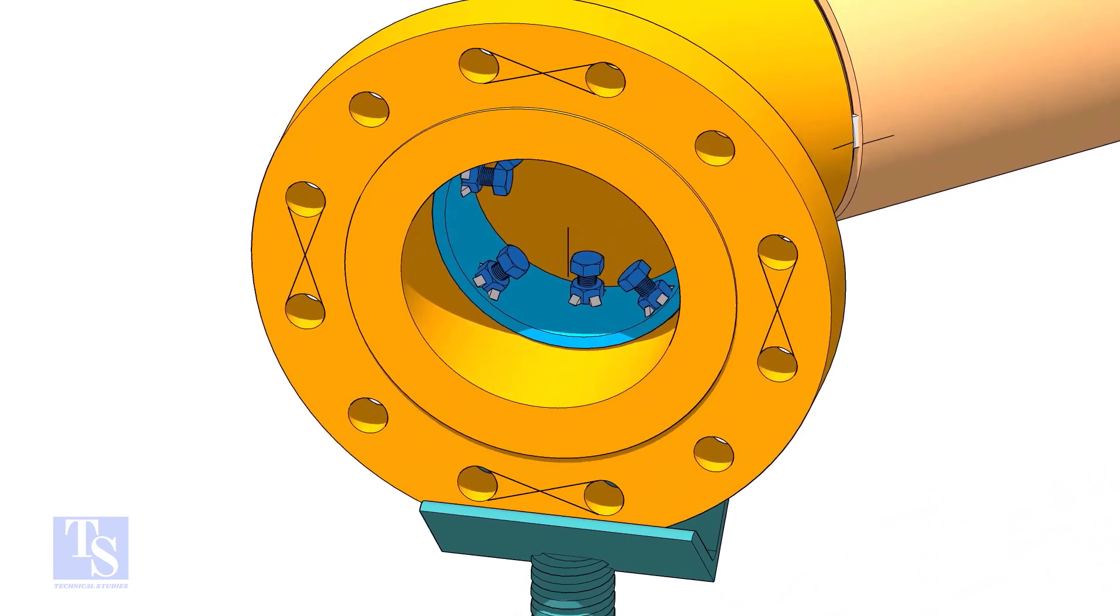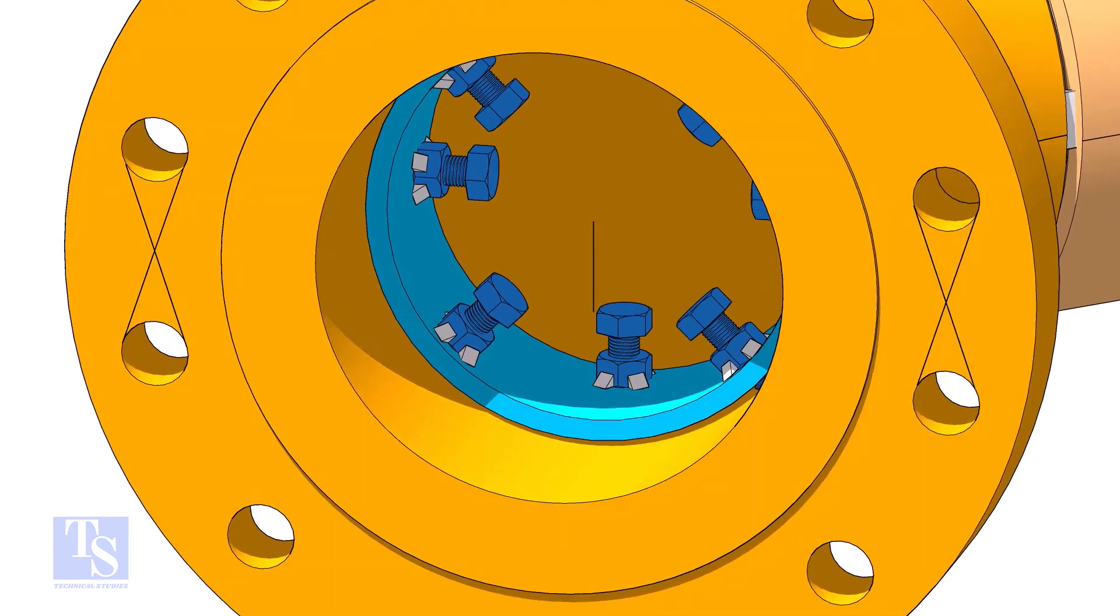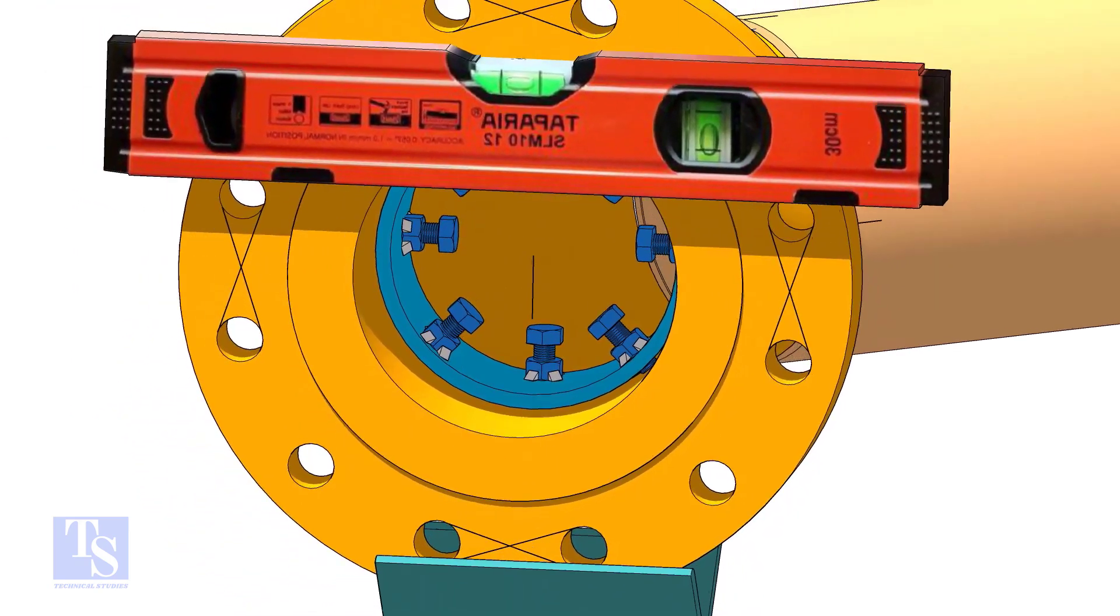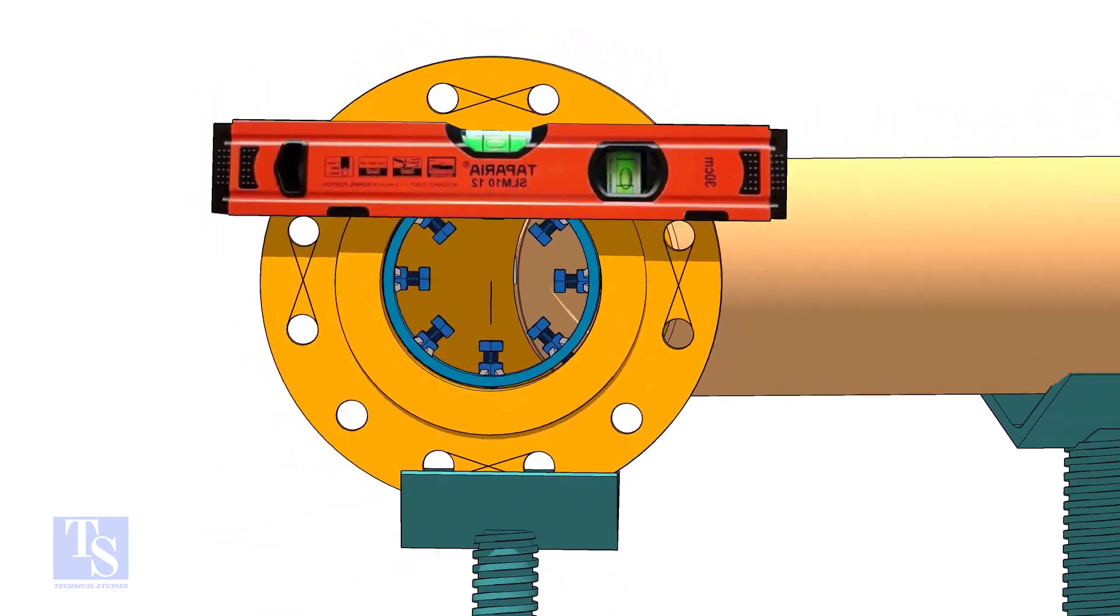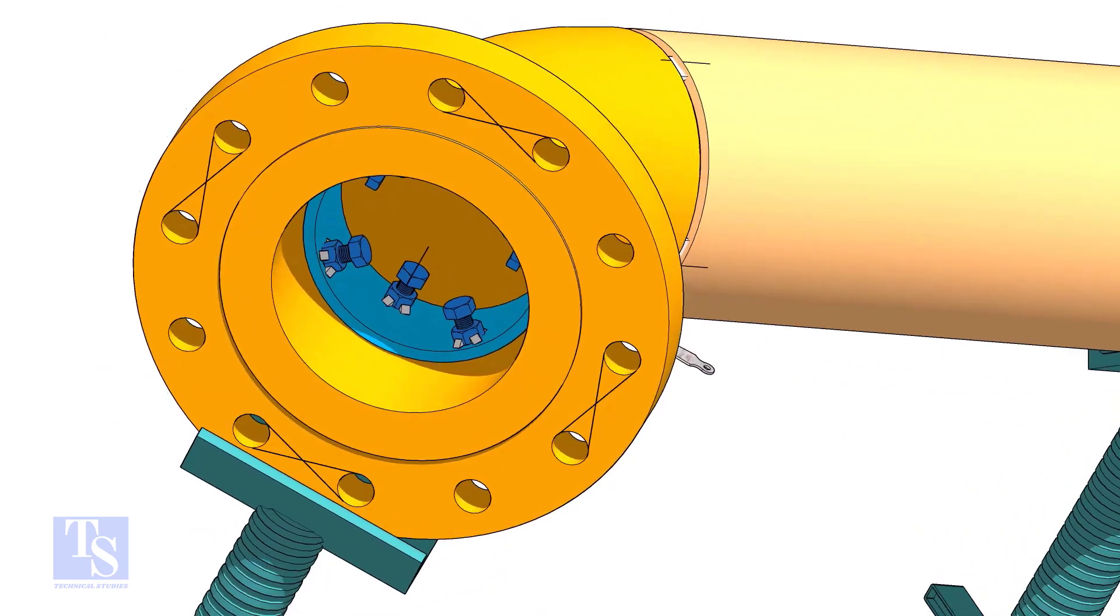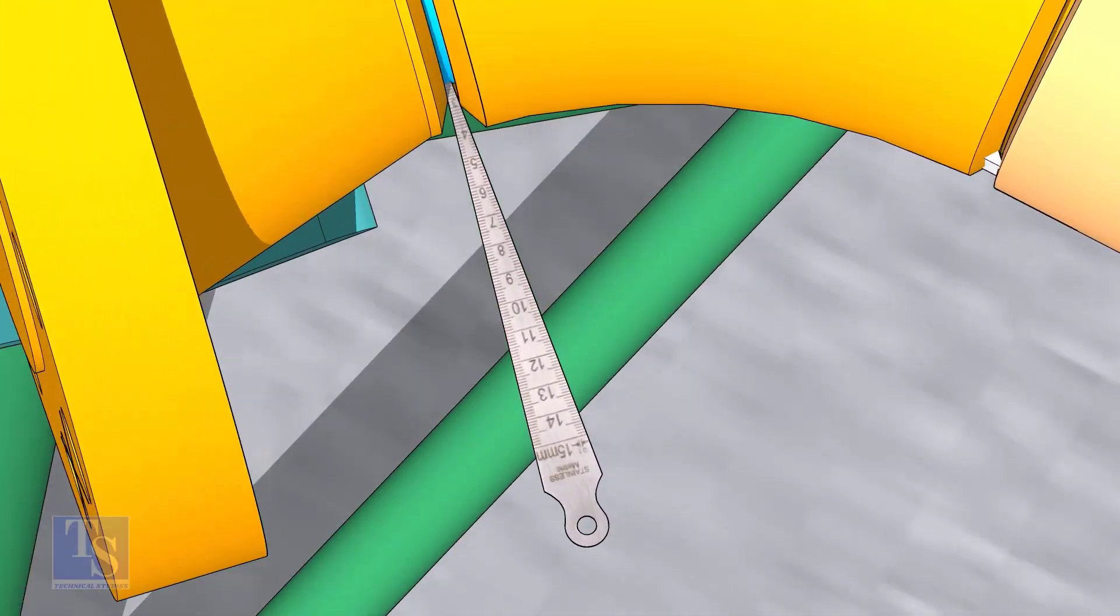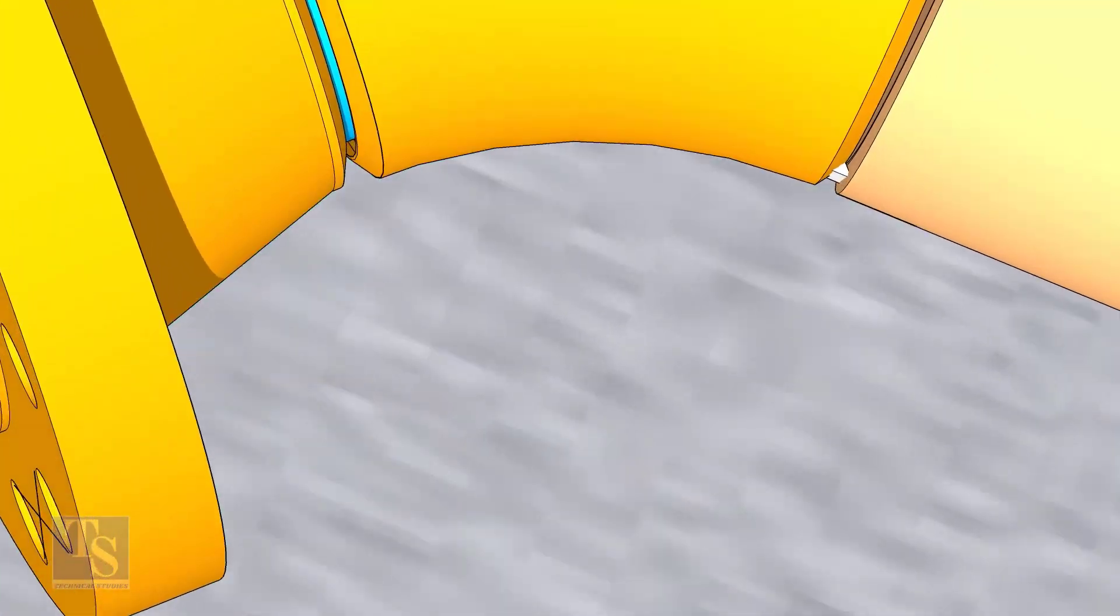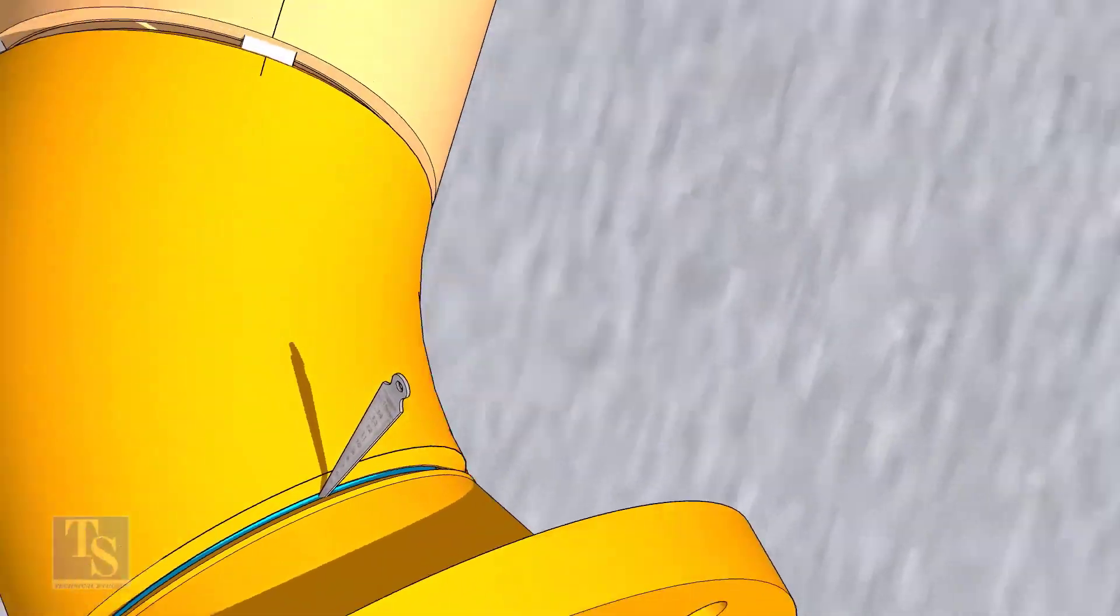Put the flange in its position and maintain the level. Tighten the clamp bolts lightly. Check the gap and the overlap. Tack weld on the top and bottom sides of the joint.